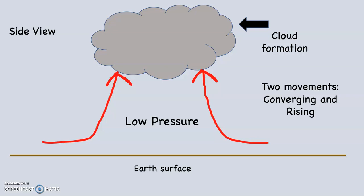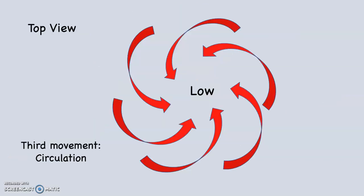There are three movements — so far we have two: converging and rising. But there is a third movement, which is circulation. If you are up in space watching a low pressure system move in the Northern Hemisphere, the circulation would look counterclockwise and inward. Notice the arrowheads are pointing towards the low — it's not just making a circle, it's counterclockwise and spiraling inwards. So: converging, rising, circulating.